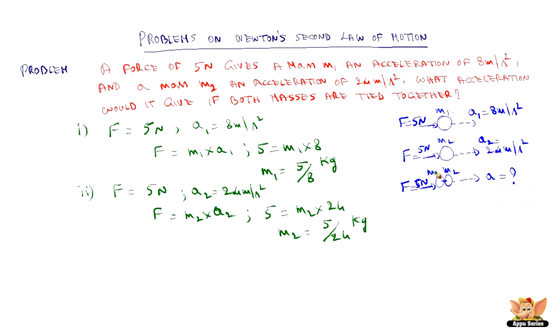We know m1, we know m2, we know force, so we should be able to find A. So in the third case, F is the same 5 Newton and mass is m1 plus m2, so 5 by 8 plus 5 by 24, which is, taking LCM 24, 15 plus 5 which is 20 by 24. So 4 cancels, 5 by 6 kg.